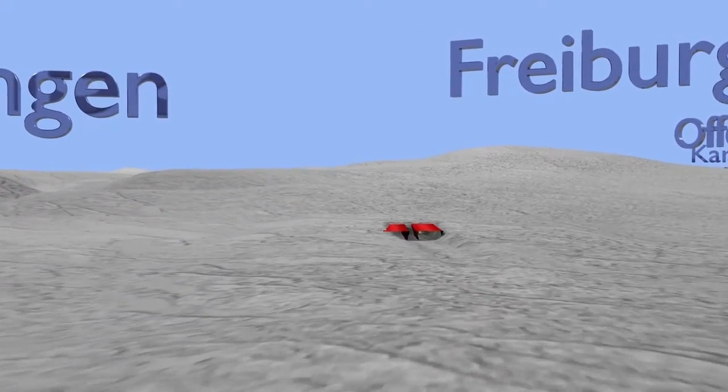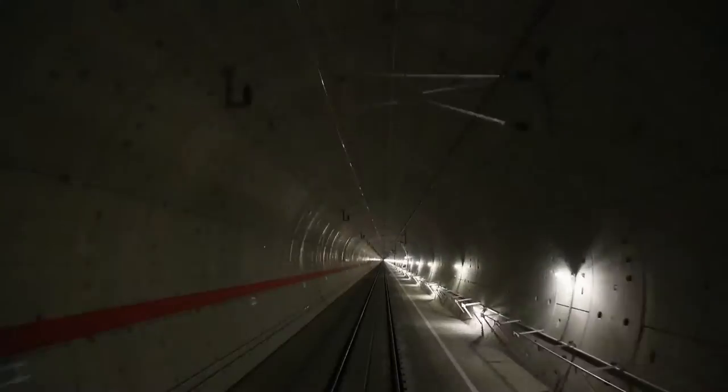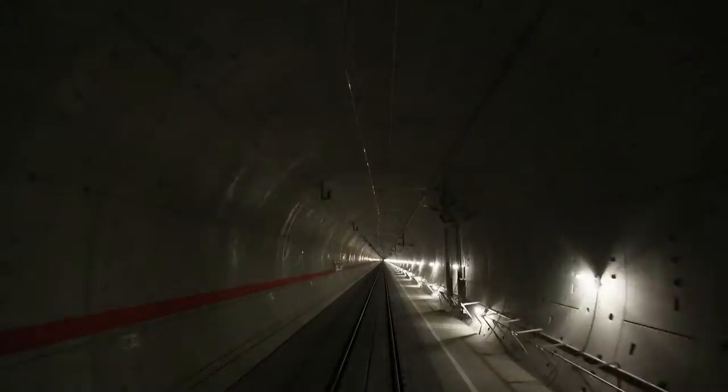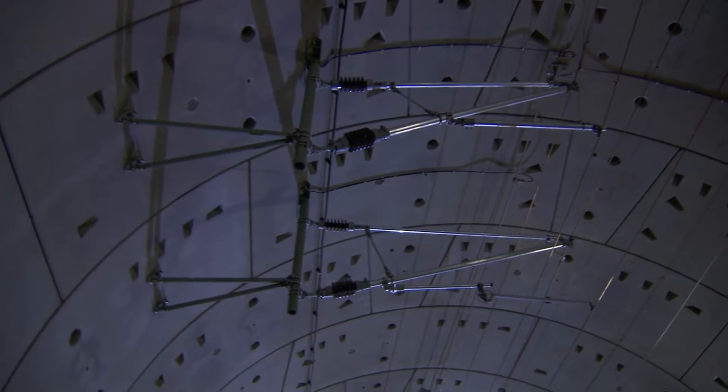In future, trains with speeds of up to 250 km per hour will be sent through the third longest rail tunnel in Germany. Installation of a high-speed overhead contact line has made this possible. Planners and engineers are realizing a new installation method for the single track tunnel tubes, consisting of segmented liners made from concrete, so-called tunnel rings.